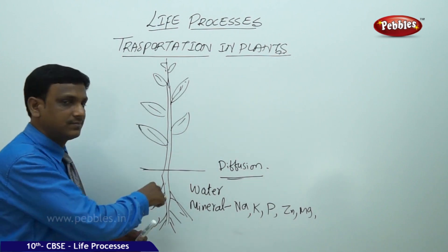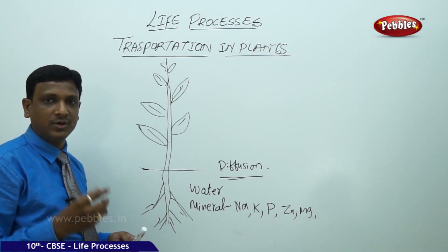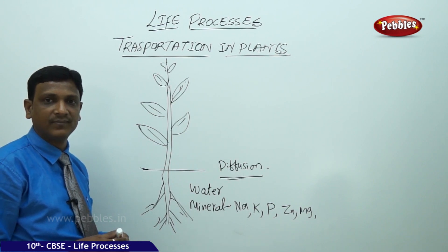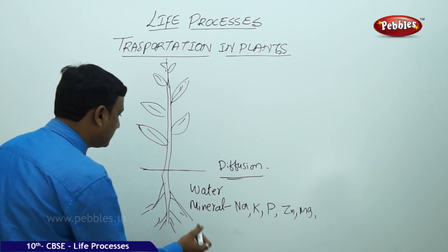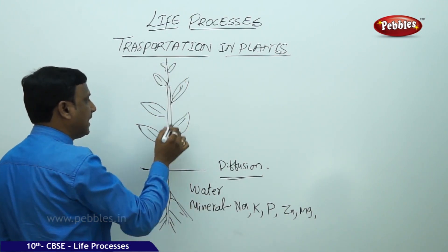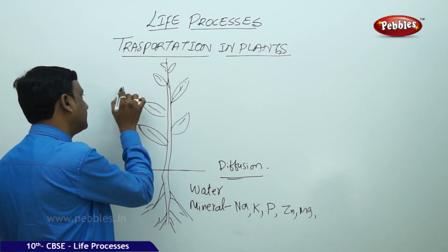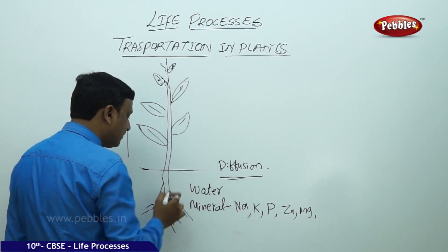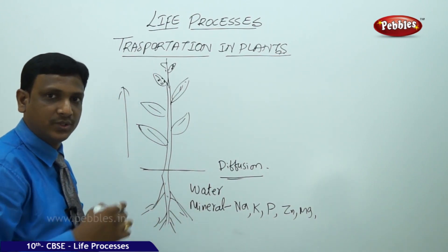Plants have some tissues to transport the water, but they don't have any pumping organs like the heart in animals. Transport is one way — water from roots to the tip of the plant. Food is prepared in the leaves and sometimes has to be stored in the roots, as in carrots, or in the stem.